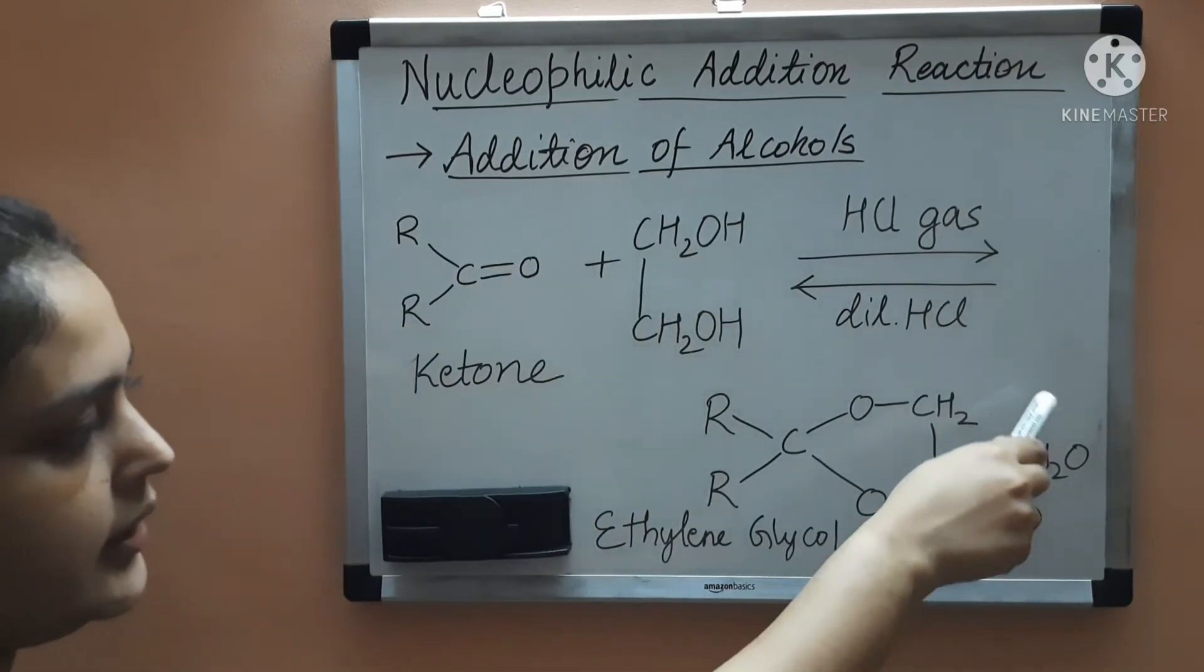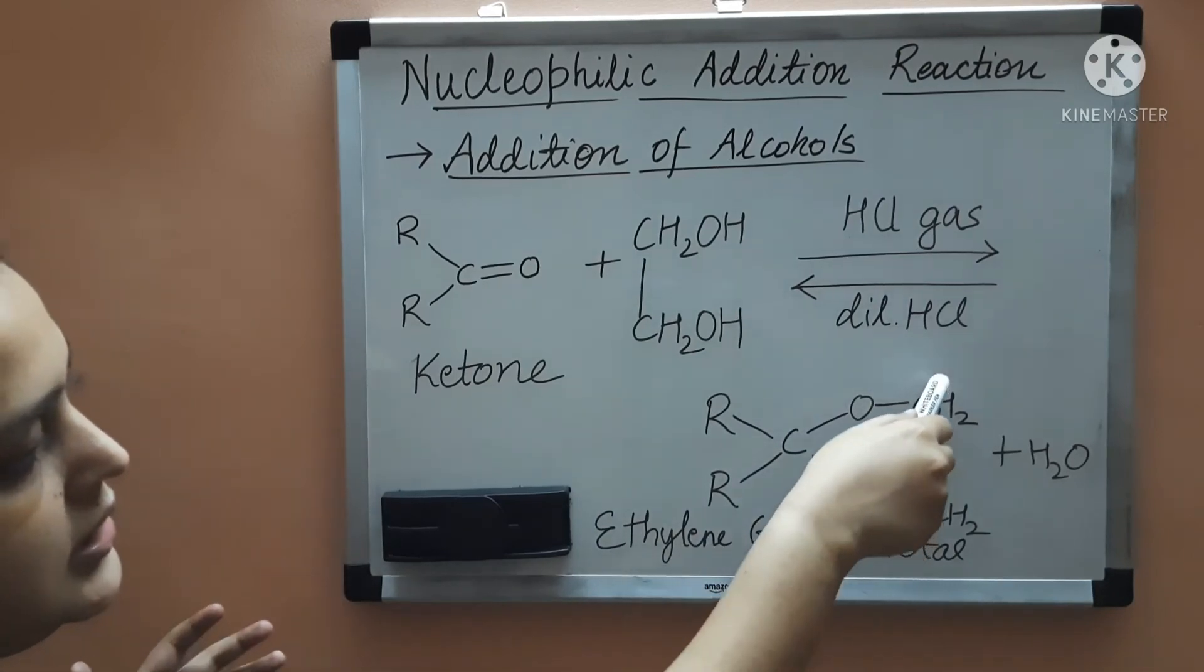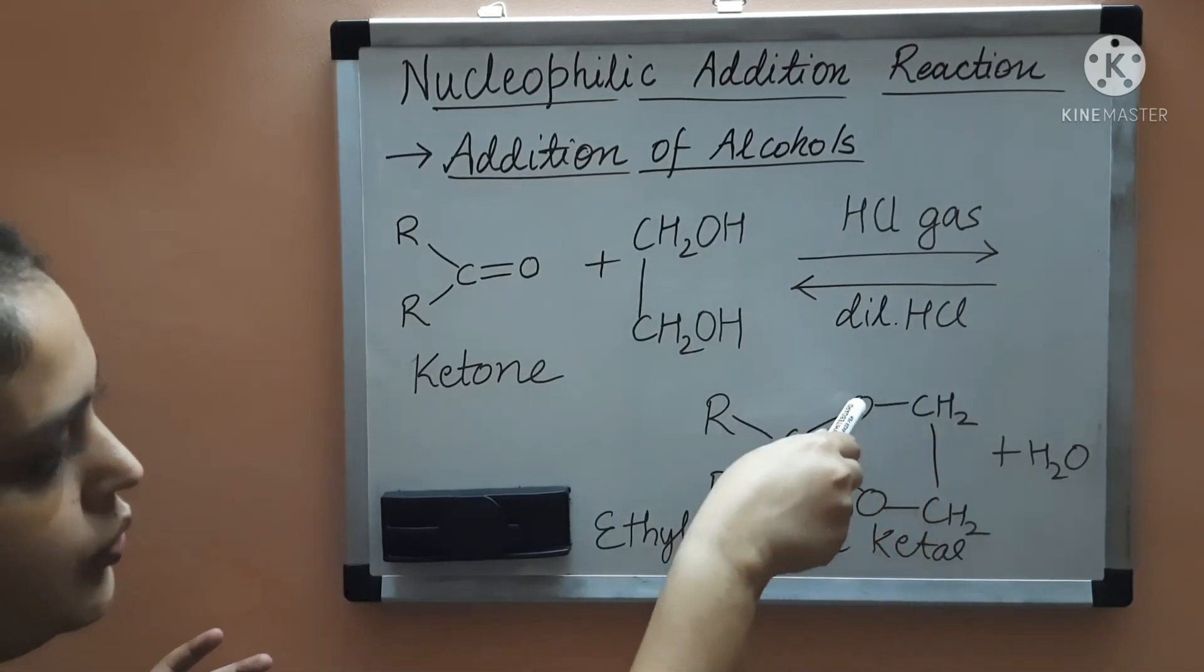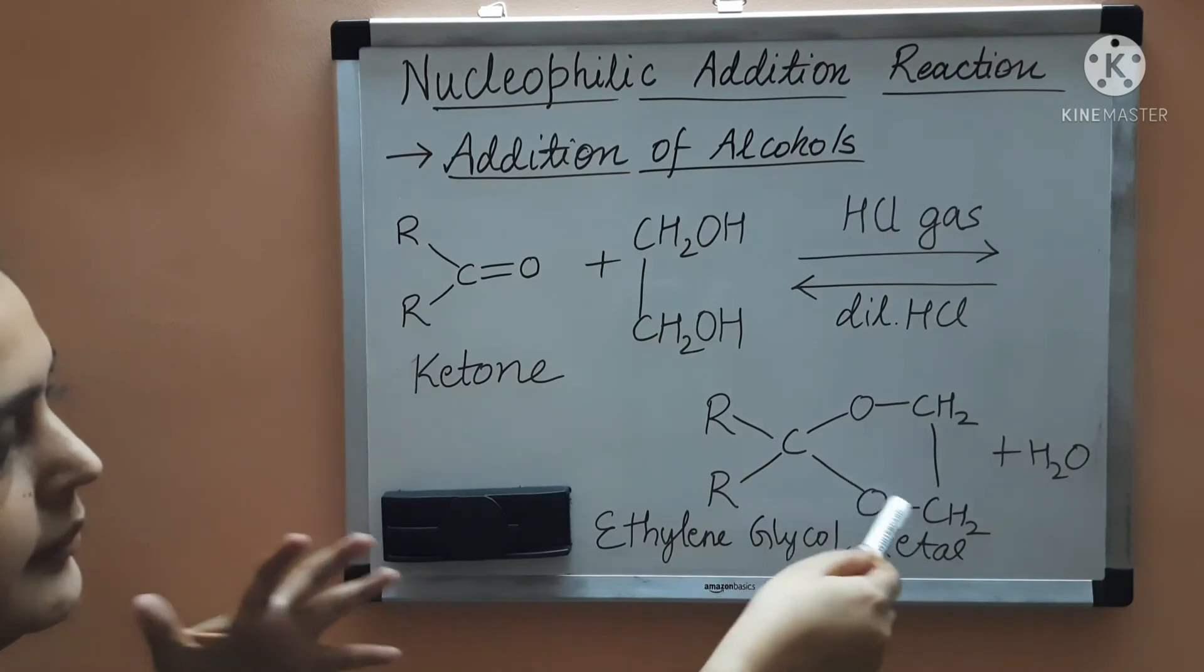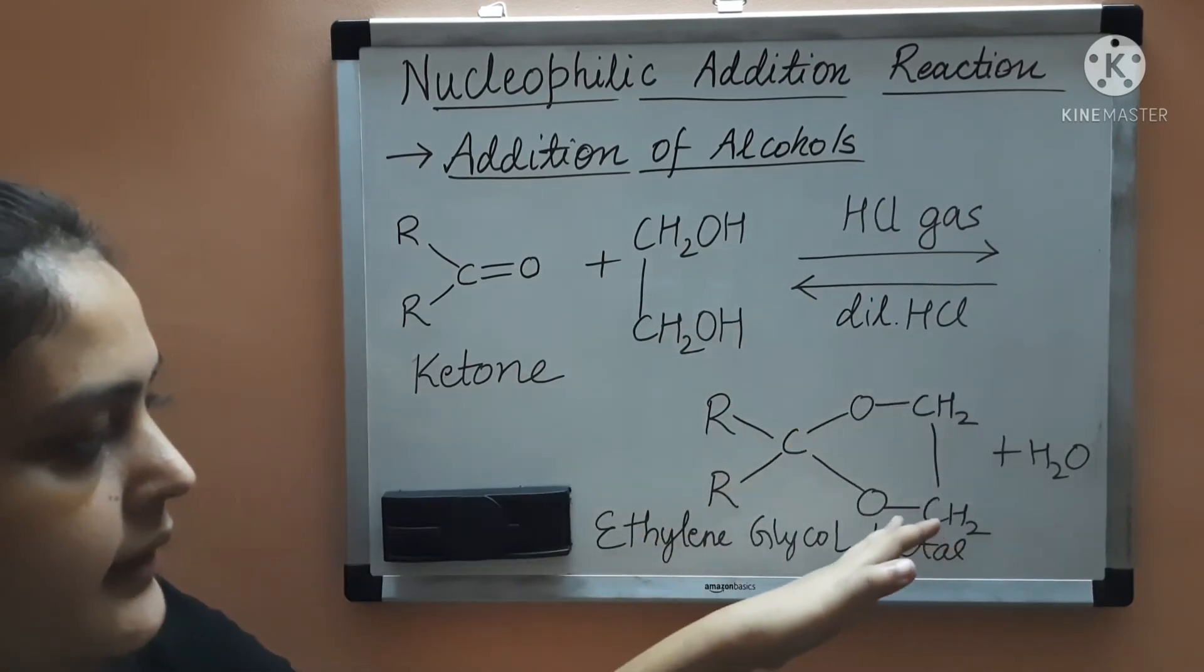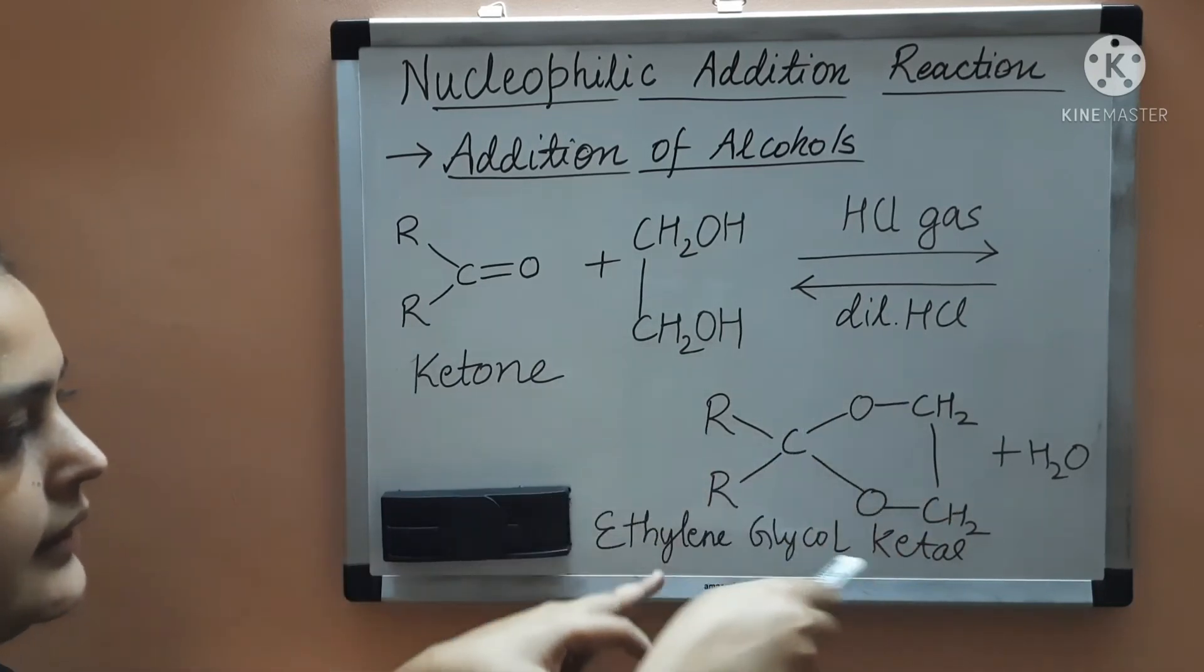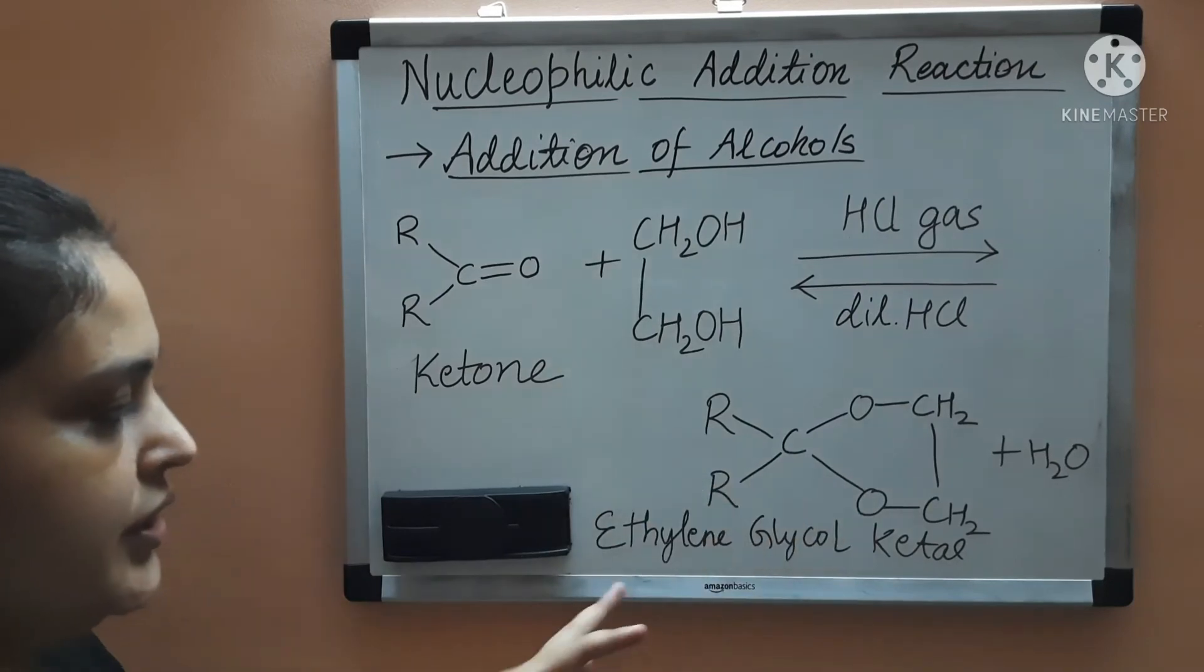H2O is removed and you are getting this cyclic ketal in which the CH2O and CH2O they combine with the carbonyl carbon and form the cyclic ketal means the alkoxy group in the cyclic form with the ketone. So this is named as ethylene glycol ketal.